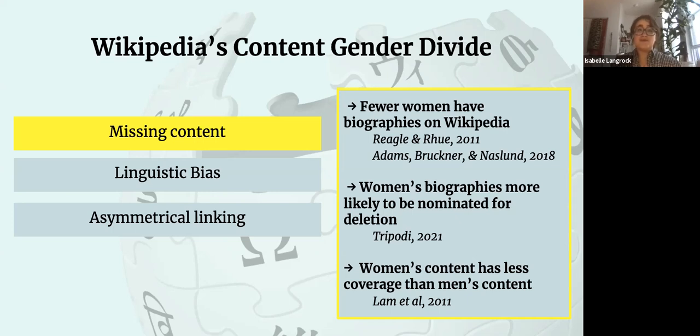And women's biographies are also more likely to be nominated for deletion. So even if someone writes a biography that might not last, we know this in cases like the pretty famous case of Donna Strickland, who didn't have a Wikipedia page until after she won the Nobel Prize in physics in 2018. But she, someone had tried to create a page for her in 2014 that was then deleted. And then even if we do have a biography and it passes any sort of deletion debate so that it stays on the encyclopedia, women's content has less coverage than men's content, so pages are more likely to be shorter, and this is true for biographies as well as for content that's more stereotypically feminine.